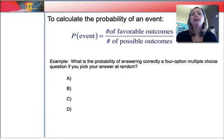Okay, to calculate the probability of any event, we take the number of favorable outcomes, the way the event happens the way we want it to happen, divided by the total number of possible outcomes. So let's look at an example.